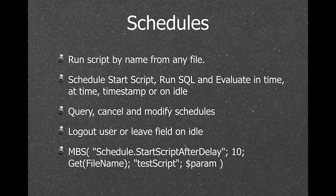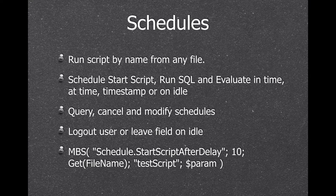Next we have schedules. We can run a script by name from any file, and especially run the script at a certain time of day — like at 5 o'clock every day, at a certain timestamp like tomorrow at 3 o'clock, in 5 seconds, or when the user is idle. You can query the current schedules, cancel or modify them. It's very common to use this to log out the user or leave the current field if the user is not doing anything for 5 minutes. This avoids having locking errors on your database.